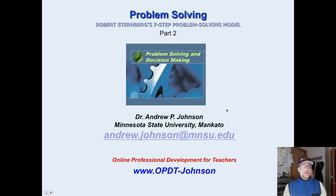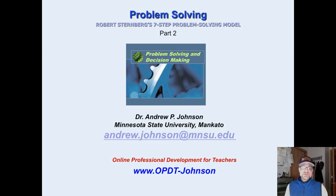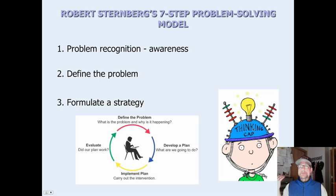This is part two of our problem-solving adventure. The last one we looked at the creative process and the Wallace model of creativity. Here we are looking at the problem-solving process, specifically one problem-solving model: Robert Sternberg's seven-step problem-solving model. This is one of many models, by the way, just so you don't think this is the model.